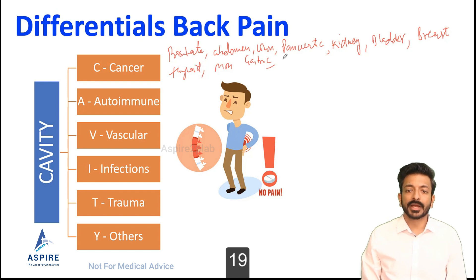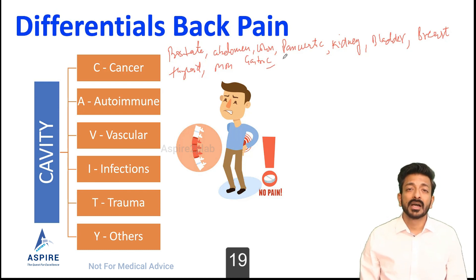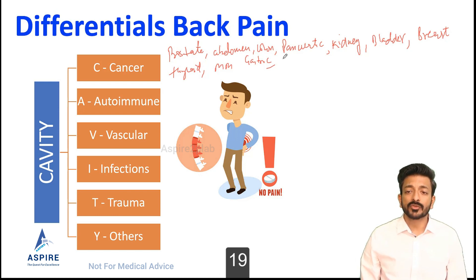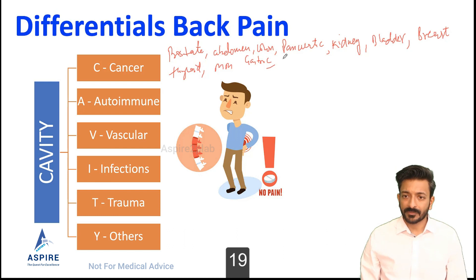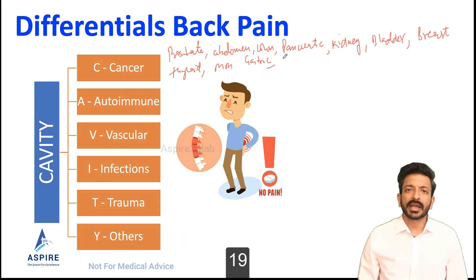For kidney cancer, we consider general cancer symptoms plus a palpable lump in the loin and hematuria. For bladder cancer, we have painless hematuria, and risk factors include smoking and working in dye factories. For breast cancer, we ask if the patient has noticed any lump in the breast, followed by mammogram, ultrasound, or biopsy. For thyroid, we ask thyroid-related questions.